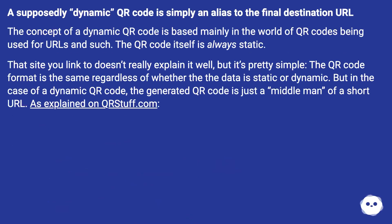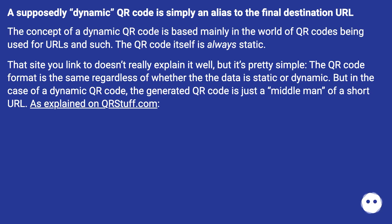A supposedly dynamic QR code is simply an alias to the final destination URL. The concept of a dynamic QR code is based mainly in the world of QR codes being used for URLs. The QR code itself is always static. That site doesn't really explain it well, but it's pretty simple. The QR code format is the same regardless of whether the data is static or dynamic, but in the case of a dynamic QR code, the generated QR code is just a middleman of a short URL.